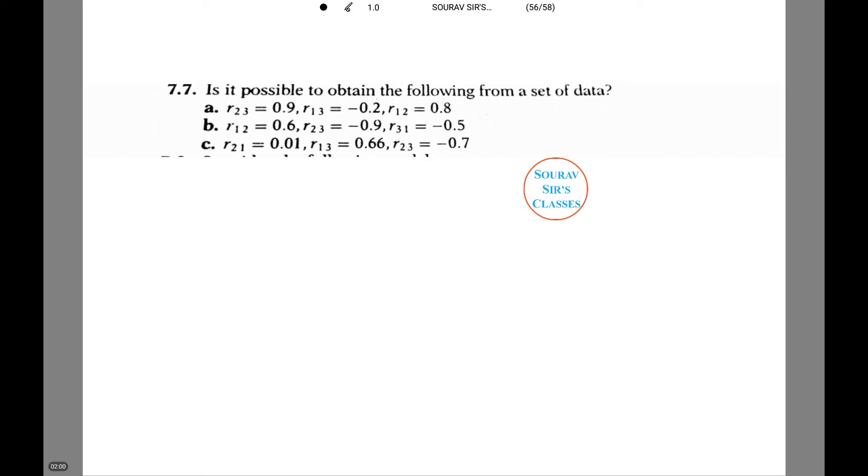Or B: r12 equals 0.6, r23 equals -0.9, r31 equals -0.5. C: r21 equals 0.01, r13 equals 0.66, r23 equals -0.7. Let's see for A.